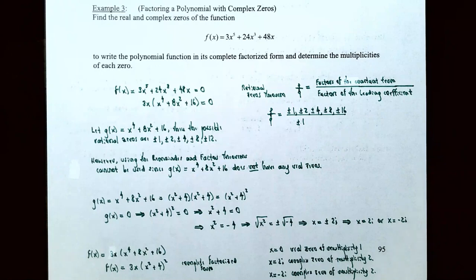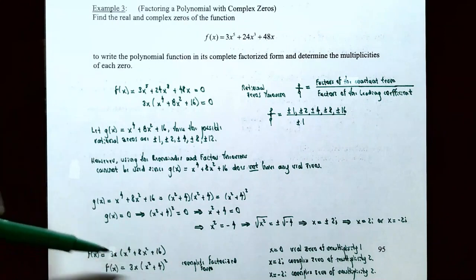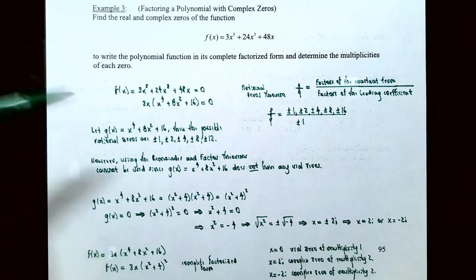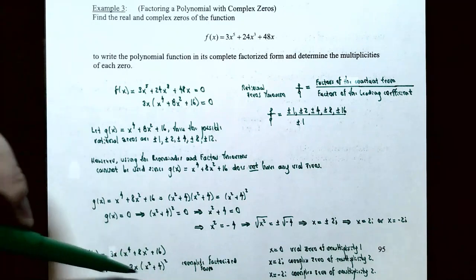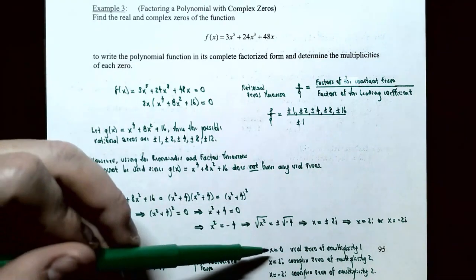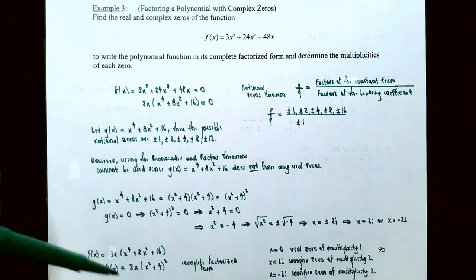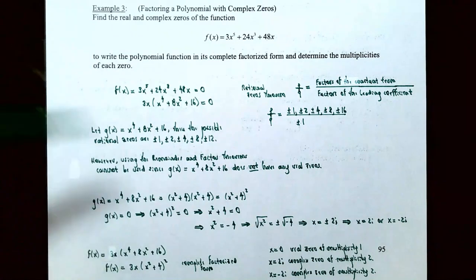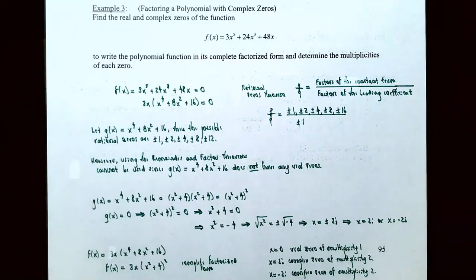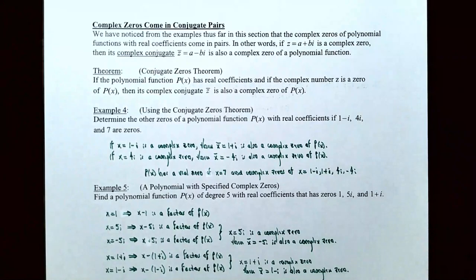Summarizing: f(x) = 3x(x² + 4)². The real zero is x = 0 with multiplicity 1. The complex zero x = 2i has multiplicity 2, and x = −2i also has multiplicity 2. Total zeros counting multiplicities: 1 + 2 + 2 = 5, which equals the degree of the polynomial.